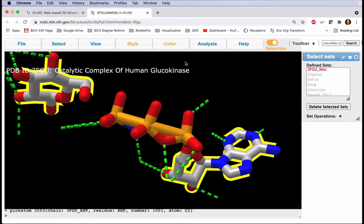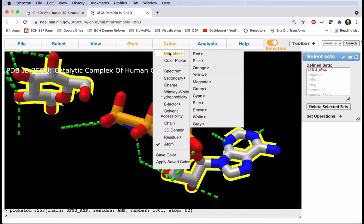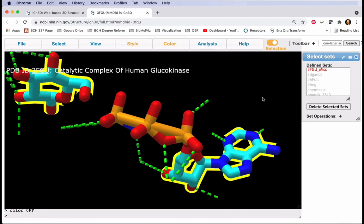With all of our carbon atoms now selected, we can color them by unicolor, and let's make them cyan.